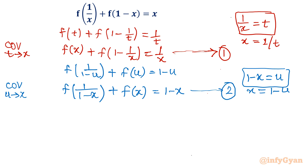Now, notice that Equation 2 contains f(1 - x) and Equation 1 contains f(1 - 1/x), so they are not going to eliminate each other directly. We have to use something else — a third substitution.